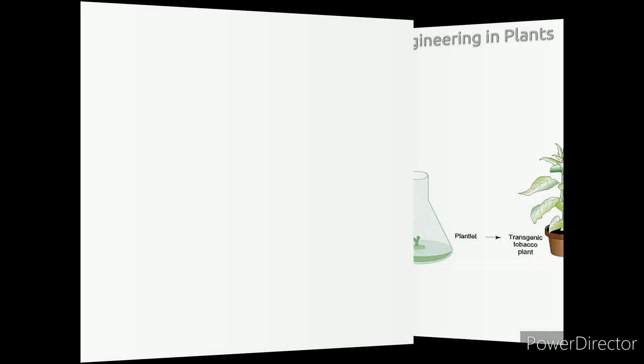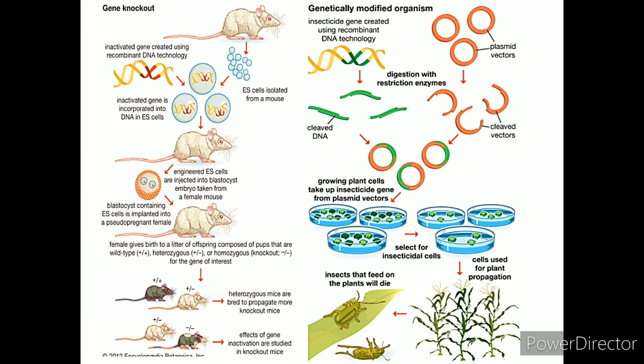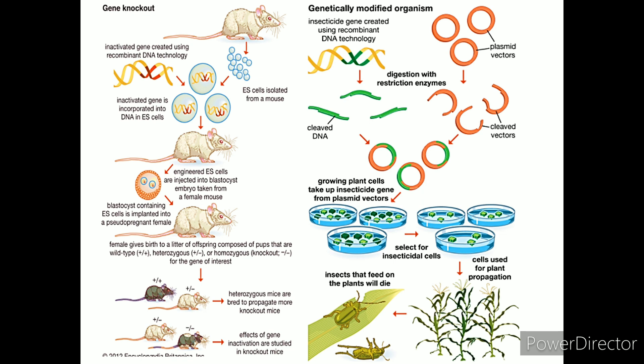Uses of transgenic animals include basic research, knockout mice for determining the function of a gene, knockout mice for genetic disease models, and production of useful proteins. Transgenic animals paved the way for gene therapy — the correction of a genetic deficiency in a cell by the addition of new DNA. This definition has been expanded to include treatments of acquired diseases by the addition of new DNA.